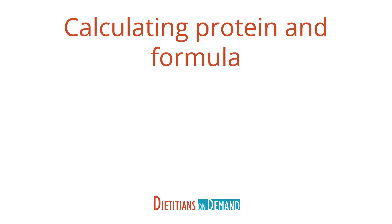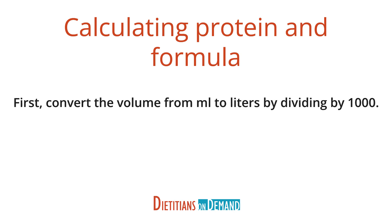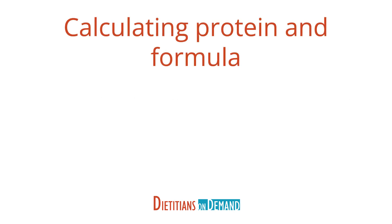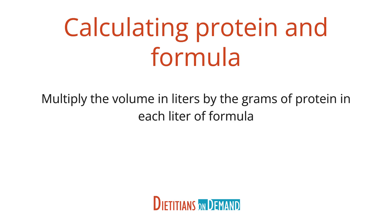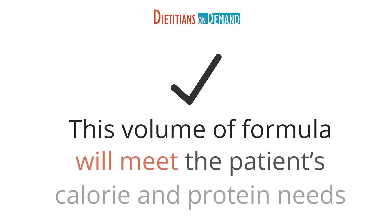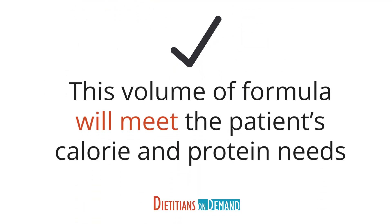Now check to see how many grams of protein this volume of formula will provide. First we have to convert the volume from milliliters to liters by dividing by 1,000. 1,667 milliliters of formula divided by 1,000 equals 1.667 liters of formula. Now multiply the volume in liters by the grams of protein in each liter of formula: 1.667 liters times 60 grams of protein per liter equals 100 grams of protein. Perfect! This volume of formula will meet the patient's calorie and protein needs.